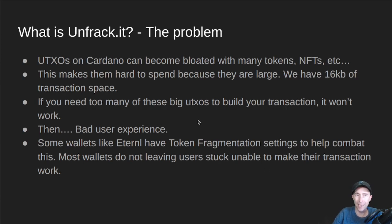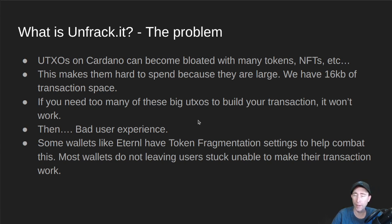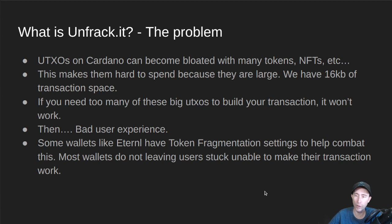So what is Unfrack.it? It is a website. The problem on Cardano is that many UTXOs become bloated with many tokens, NFTs, etc. All of the UTXO selection algorithms created by the scientists back in the day assumed only a single token, ADA. A lot of that work has not yet been brought forward into the days where we have tokens sprayed everywhere. This makes a lot of these UTXOs hard to spend because they're large. We have a 16 kilobyte limit on transaction space, so if you need too many of these big UTXOs to build your transaction, it won't work, your wallet will fail and give you an error, leaving you with a bad user experience.